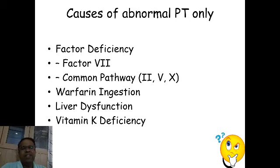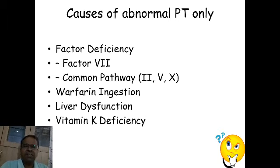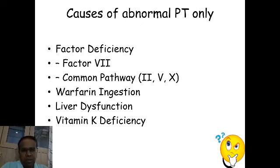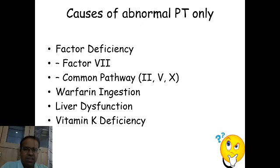Coming to causes of abnormal prothrombin time: first is factor deficiency — factor 7, since the extrinsic pathway starts with factor 7 — and common pathway factors 2, 5, and 10, in which case APTT is also expected to be prolonged. Other causes include coumarins and warfarin ingestion, liver dysfunction, and vitamin K deficiency.